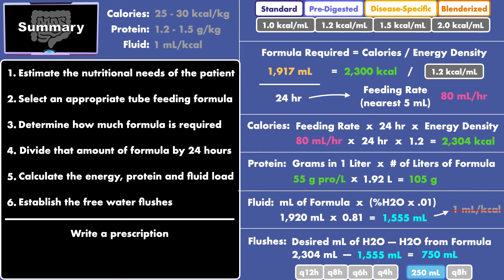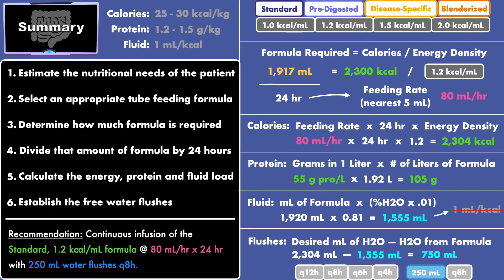After all calculations and decisions have been made, you write the prescription. We recommend a continuous infusion of the standard 1.2 calorie formula at 80 milliliters per hour times 24 hours per day, with 250 milliliter water flushes every 8 hours. This provides a maximum of 2,304 calories, 105 grams of protein, and 2,305 milliliters of water per day.